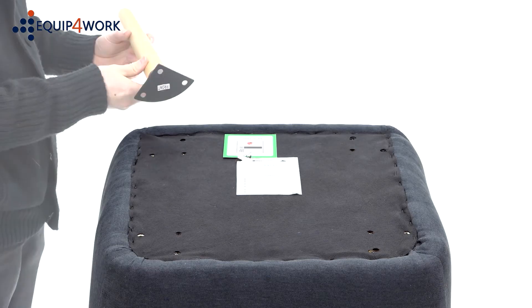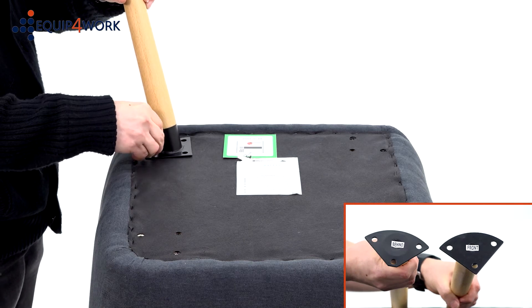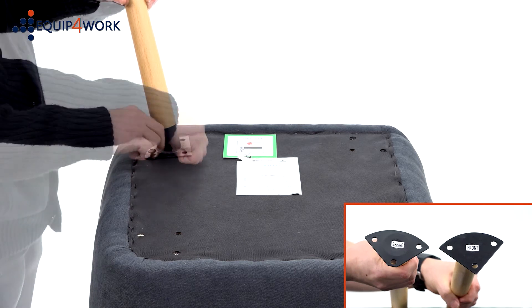Turn the seat over and carefully attach the four legs. Each leg is marked front and behind, so you know if they're attached to the front or the rear of the chair.